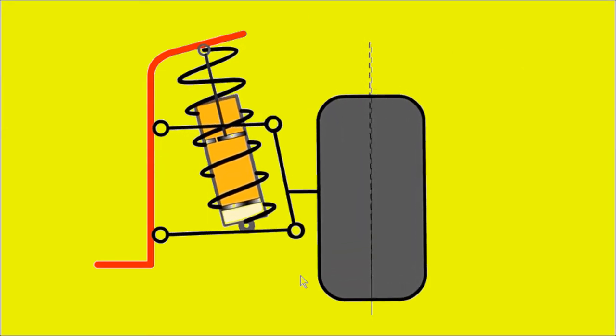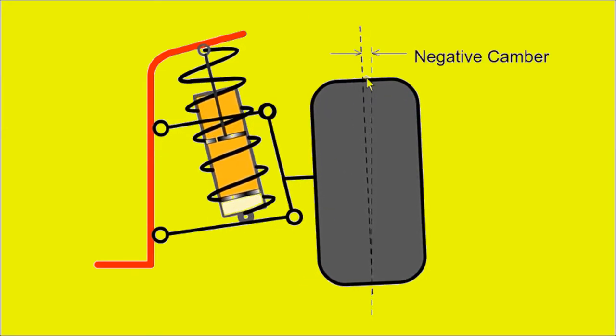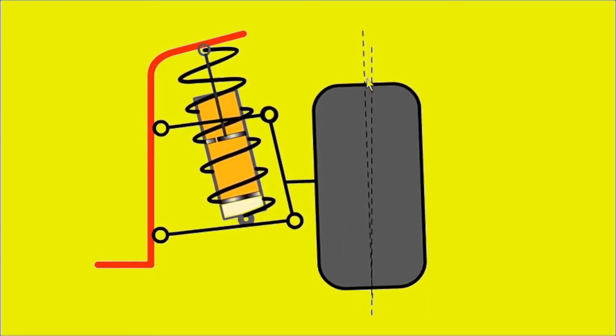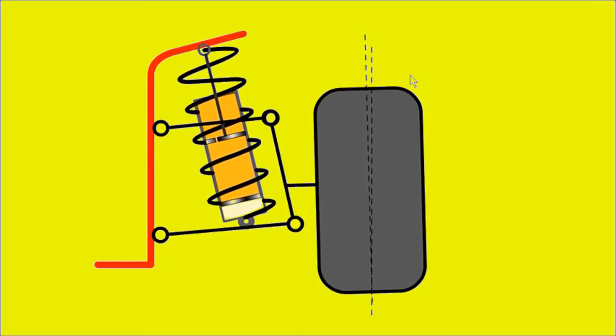The wishbones can be designed to alter the camber of the wheel as the suspension is deflected. Negative camber provides better stability as the car corners.